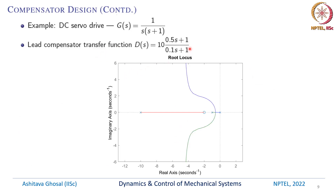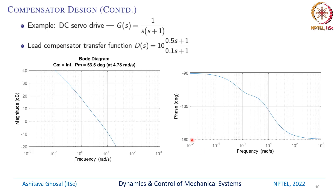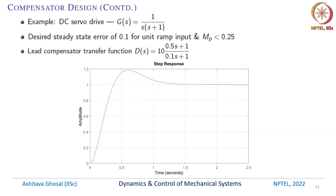We can now plot the root locus with the lead compensator 10·(0.5s + 1)/(0.1s + 1). The root locus now shows poles at s = 0 and s = -1, and we have introduced one pole and one zero. The shape of the root locus changes accordingly. Looking at the Bode diagram, the gain margin is infinity and the phase margin is 53.5 degrees at 4.78 radians per second — more than the 45 degrees we were looking for. So it looks like it will work. To finally test, we apply a step input to this system with G(s) = 1/(s(s+1)) and the compensator in series.